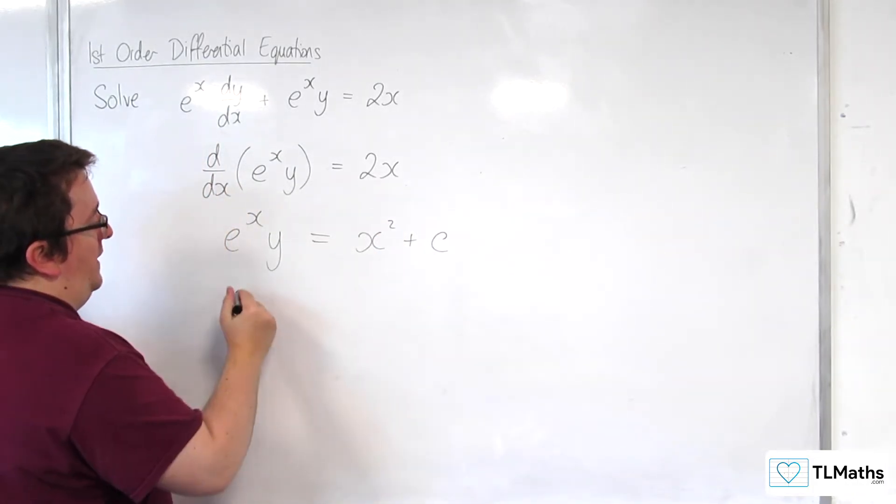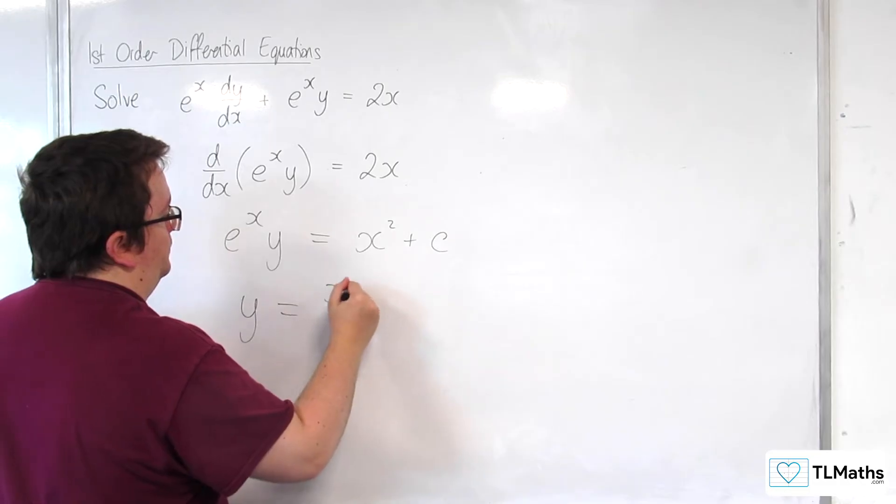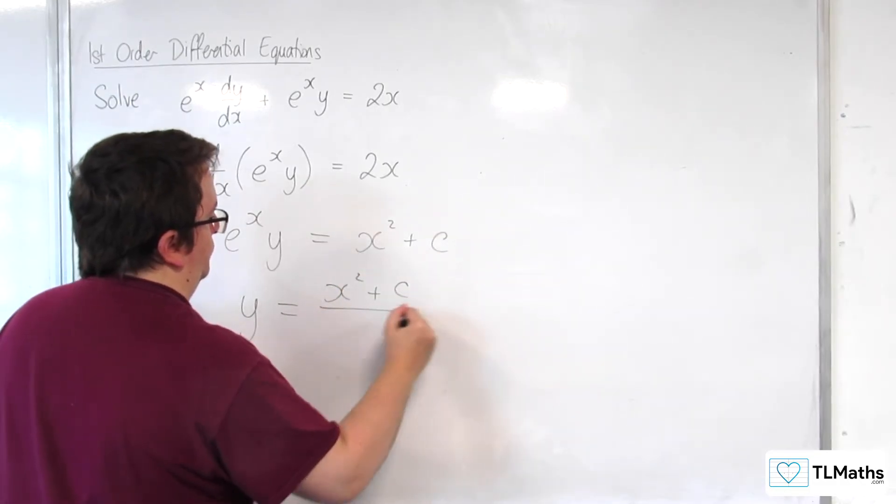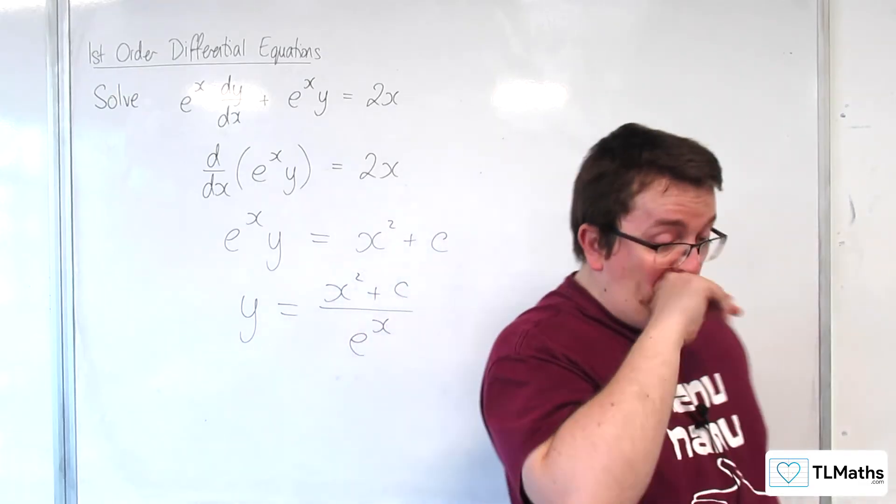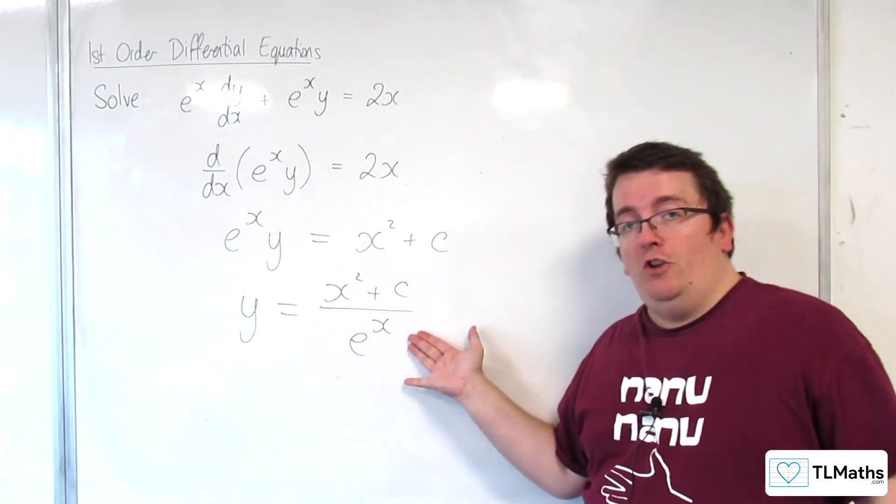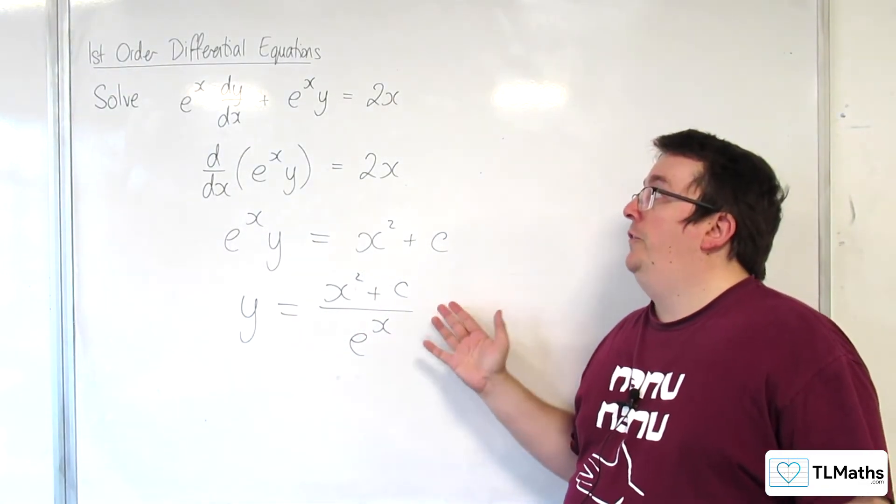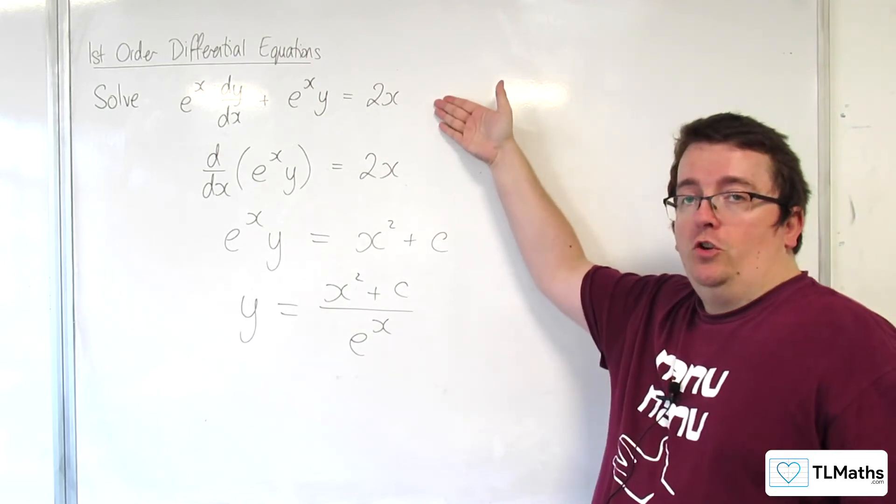And then I can divide through by the e to the x. And I get this. And this is the general solution to the original differential equation.